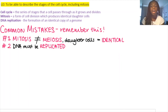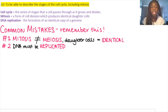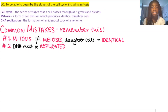Here are two common mistakes students make on mitosis. First, mitosis is not the same as meiosis — despite the similar names, they have different end products. In mitosis, daughter cells are always identical and have the same amount of genetic information. In meiosis, daughter cells are not necessarily identical and have half the normal amount of genetic material compared to the starting cell.